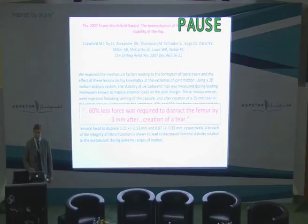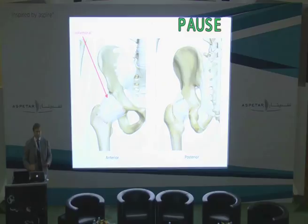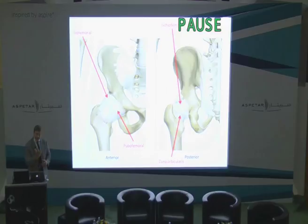So clearly the labrum does something in terms of the stability of the hip. We then have the capsuloligamentous structures: the iliofemoral ligament, which is said to be the strongest ligament in the human body; the pubofemoral ligament; the ischiofemoral ligament; and even the zona orbicularis. All of these have a spiral arrangement, so that when you stand up and your hip is extended, they tighten — they keep your hip in joint, basically preventing it from wanting to pop out the front.